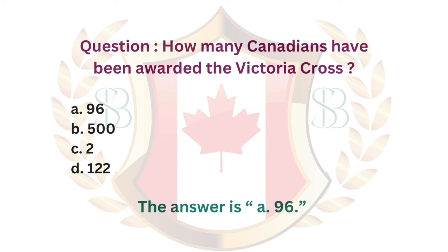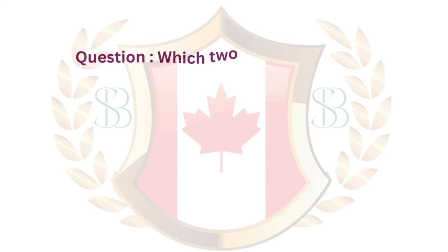Question. How many Canadians have been awarded the Victoria Cross? a. 96. b. 500. c. 2. d. 122. The answer is a. 96.